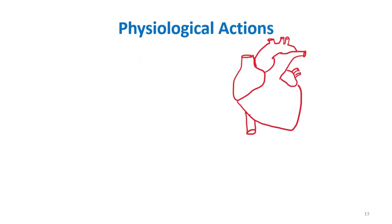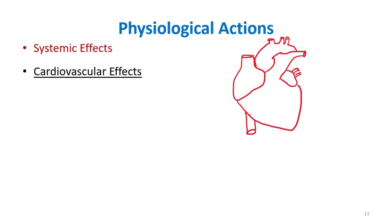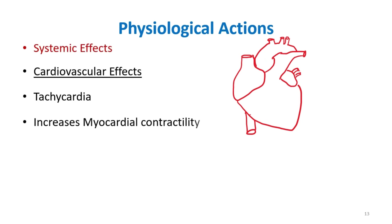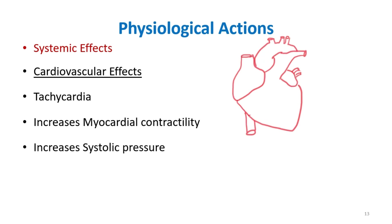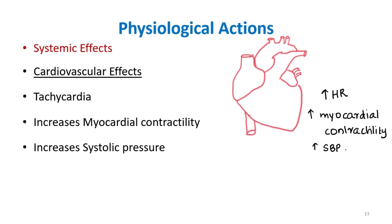Regarding systemic effects, in the cardiovascular system thyroid hormone produces tachycardia, increases myocardial contractility, and increases systolic pressure. In general, it increases heart rate, myocardial contractility, and systolic blood pressure.